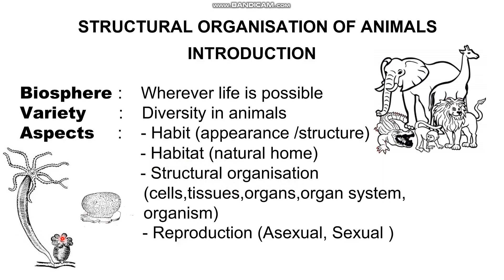Structural organization also differs. For example, sponges are made of cells; a group of cells forms hydra. From a group of cells, tissues form, which form organs. In other organisms, organs form organ systems. Mode of reproduction also differs — some cell animals reproduce sexually, others asexually. So in the biosphere, a variety of animals differ in habit, habitat, structural organization, and reproduction.